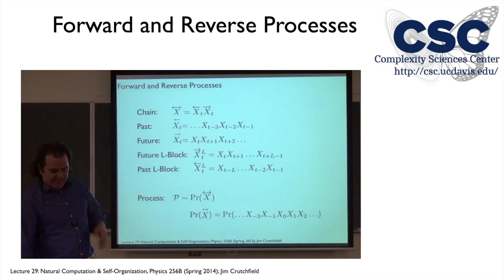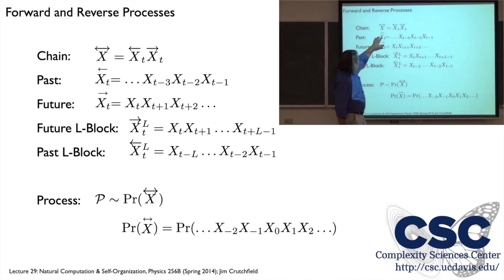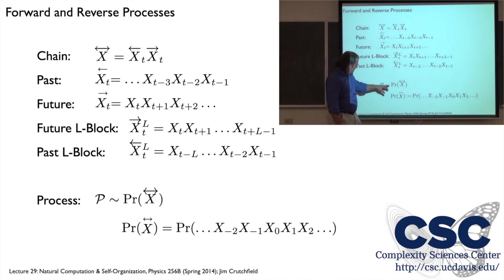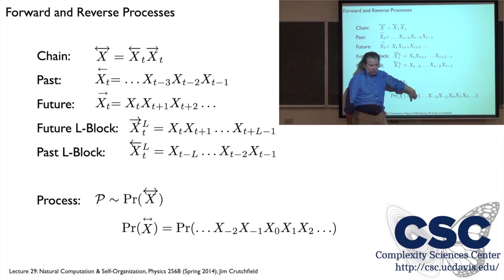Shouldn't be too difficult, but the first part is just some review. Just to set the notation: our bi-infinite chain of random variables, past and future, and we look at blocks from time t going forward l steps, or past blocks of length l that come up to but do not include time t. Our objects of study are processes distributed according to this huge bi-infinite joint distribution, the goal being to get around using that by building models.